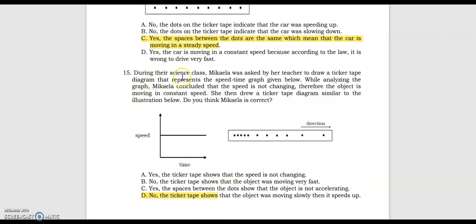Number 15, during their science class, Mikaela was asked by her teacher to draw a ticker tape diagram that represents the speed-time graph given below. While analyzing the graph, Mikaela concluded the speed is not changing, therefore the object is moving at constant speed, and she drew a ticker tape diagram accordingly. Do you think Mikaela is correct? The answer is no — the ticker tape shows that the object was moving slowly and then speeds up.